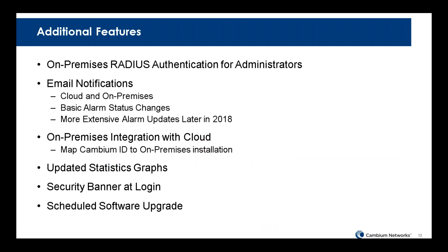Additional features include on-premises RADIUS authentication. We currently have TACACS and Active Directory, so on-premises RADIUS would be the third authentication option for CN Maestro administrators. Email notifications is probably the most asked-for feature we have. We're currently working on this for both cloud and on-premises release — a basic initial system allowing a user to configure an SMTP server and specify a set of email addresses to receive alarms as they're generated. Over time within 2018, we plan a much richer alarm infrastructure.